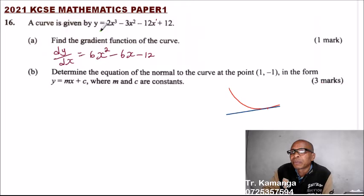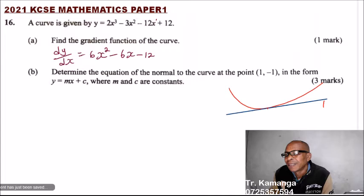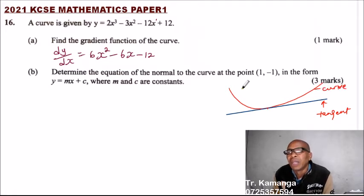This is a tangent, a straight line touching the curve at a point on the curve. That's a curve represented by a function. So a line that is perpendicular to this tangent is what we call the normal. So this is the normal. Perpendicular means they make an angle of 90.